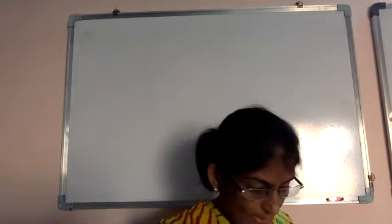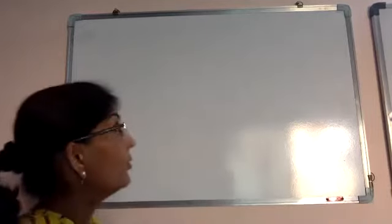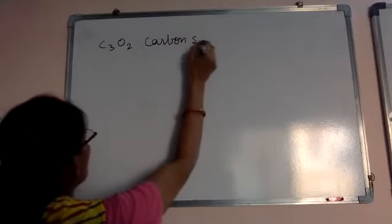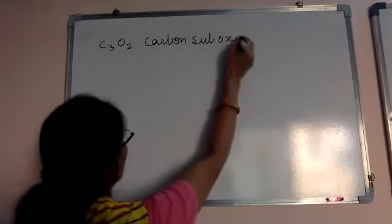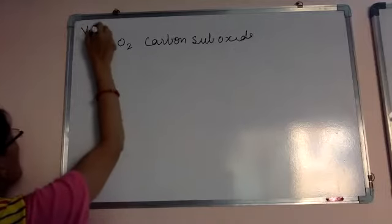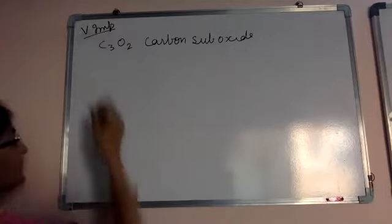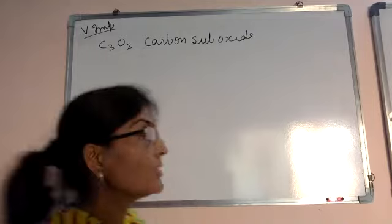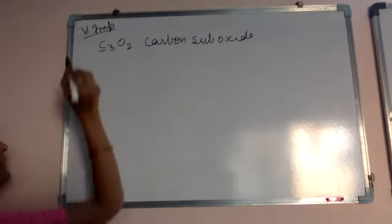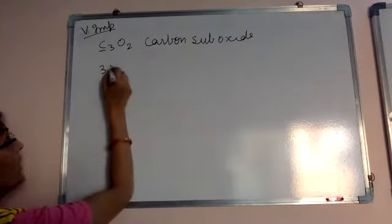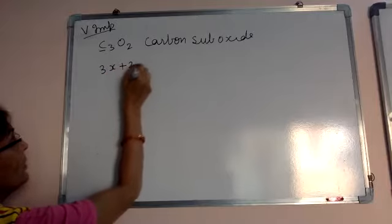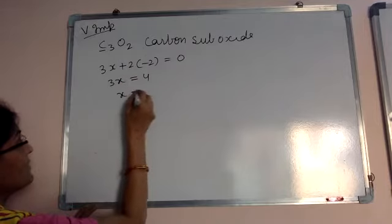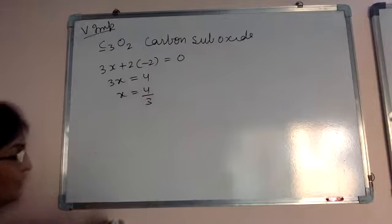For example, C3O2 — this is called carbon sub oxide. If you find the oxidation number of carbon here, it is 3x for carbon and oxygen is minus 2. So 3x equals 4, and x equals 4 by 3. It comes as a fraction.